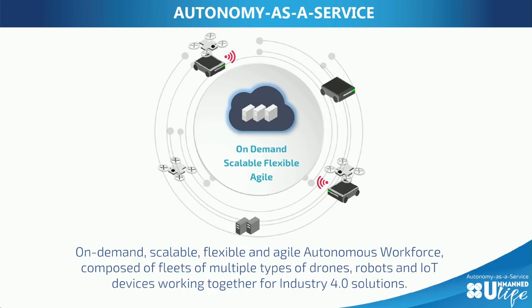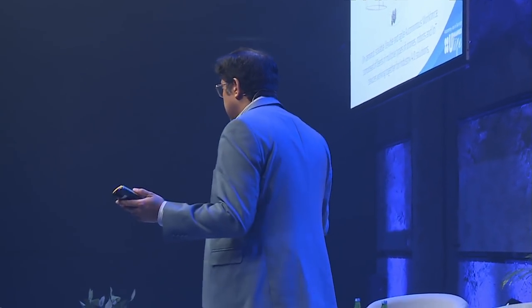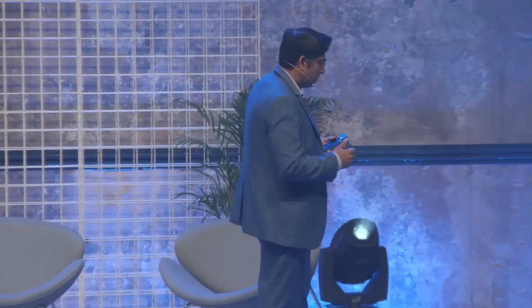In a nutshell, Autonomy as a Service is a way to provide an autonomous workforce composed of robots, drones, robotic arms, and IoT devices without having to think about how that actually works. Just like today you can take 100 human beings, put them together, and say 'manage this warehouse' — the exact same would happen with 100 drones, rovers, IoT devices, and robotic arms, without you wondering how it's happening. It goes way beyond intelligent or autonomous robots.